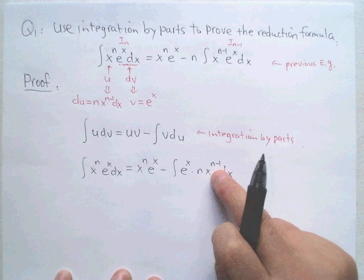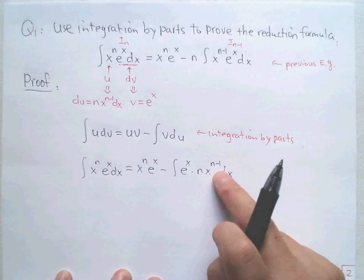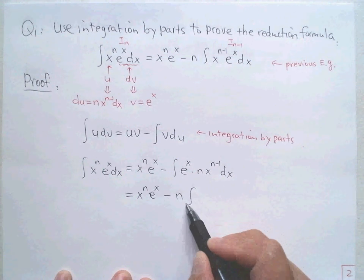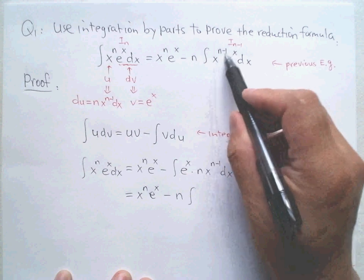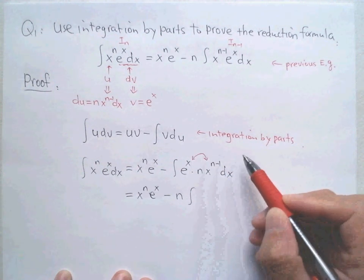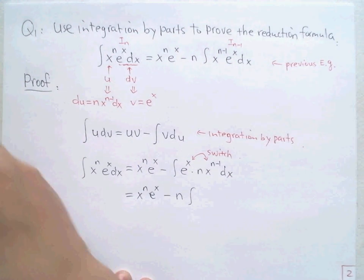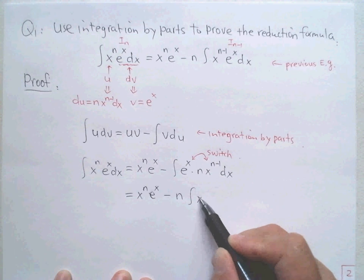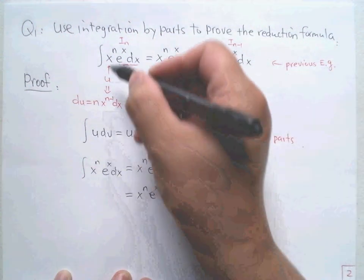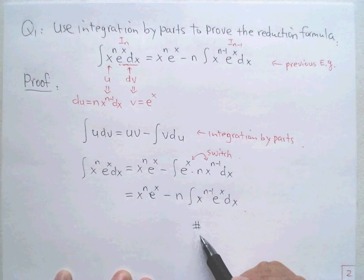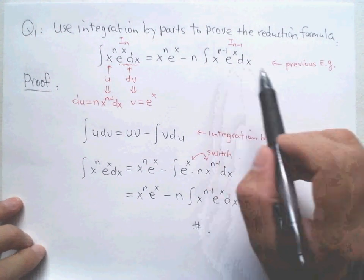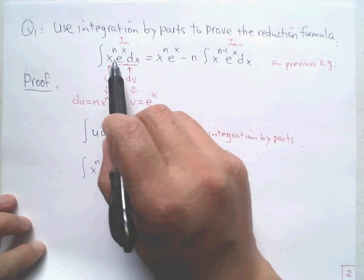If you set up correctly, it's easy to reduce the power. Now we simplify: this is x^n · e^x minus n times the integration of x^{n-1} · e^x dx. We can see this is almost exactly our target. We look at it — it's almost the same except we switch these two terms. After switching, we get x^{n-1} · e^x dx on the right side. Definitely we proved it. So we proved this first reduction formula. In the future, if we make this kind of calculation, we can directly use the formula.